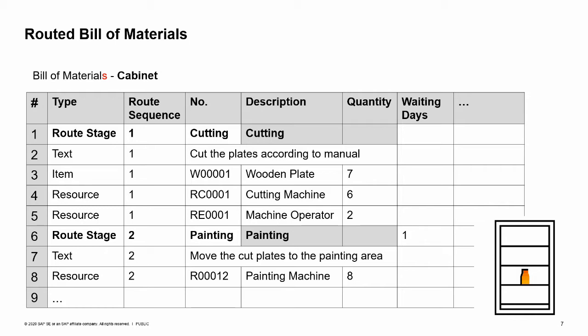OC Woodtrend manufactures a range of different cabinets. Bills of materials for cabinets include both machine and employee type resources. These resources can affect the production time of the manufacturing stage. Each stage can be dependent on its adjacent stage — either the stage before or the stage after — such that the start date or end date of a certain stage affects the start date or end date of the next stage. The routing procedure allows automatic calculation of the start date and end date of stages according to the production time of each stage.